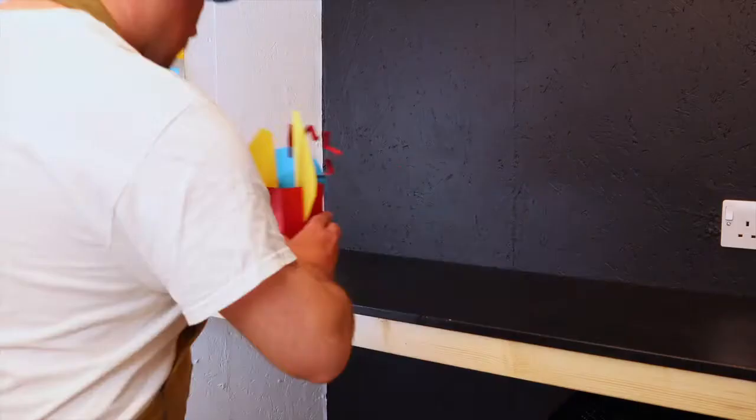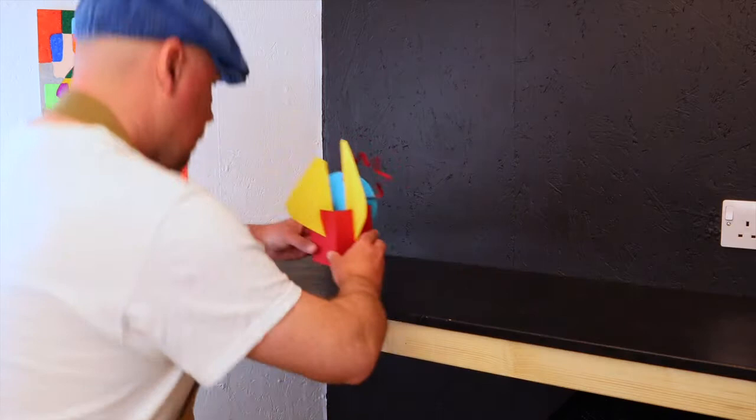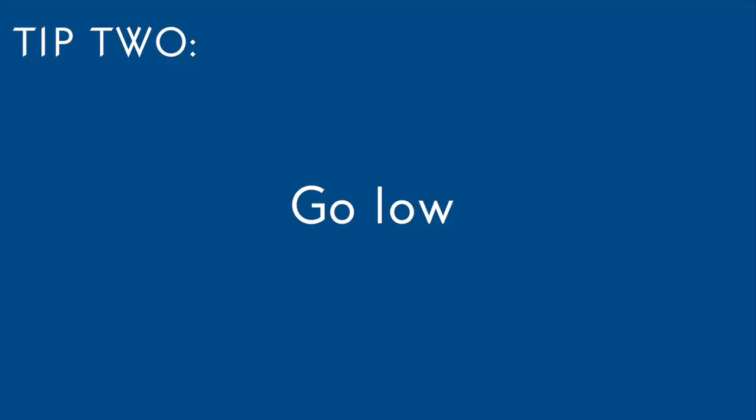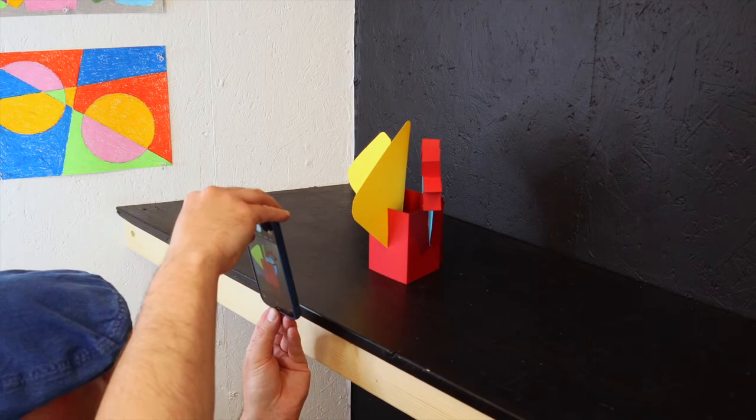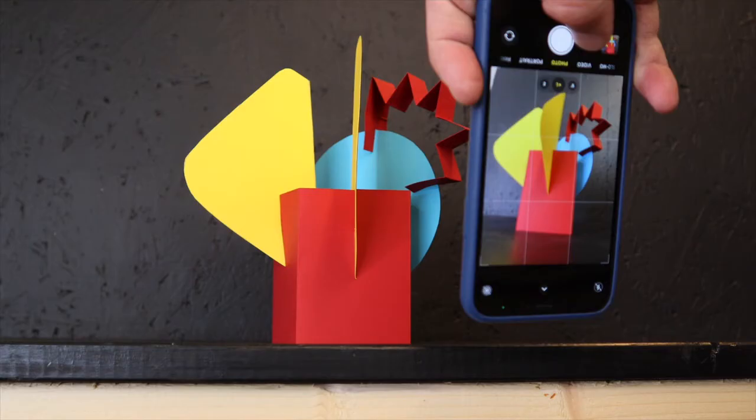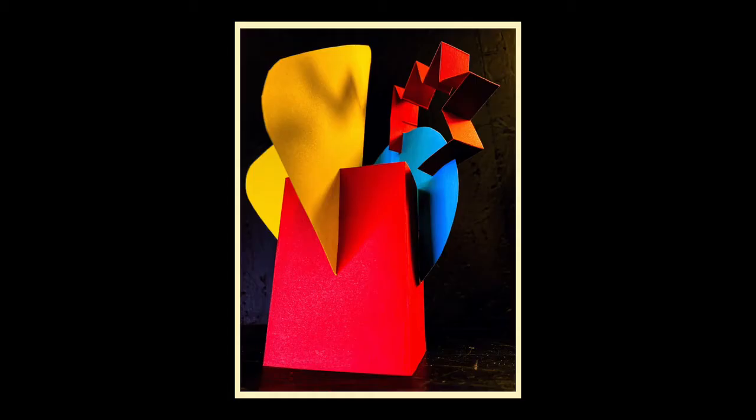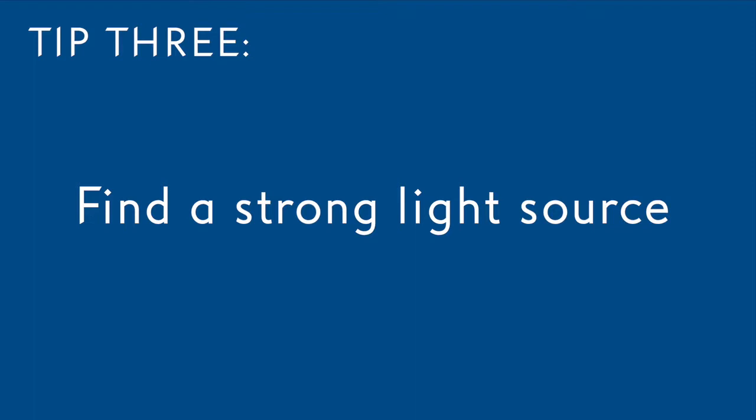Choosing a dark background creates contrast and helps the colours pop. Have a look at what you've got around you. The lower you take your photo, the more dramatic and giant your sculpture will look. Turning your camera upside down can really help as well.